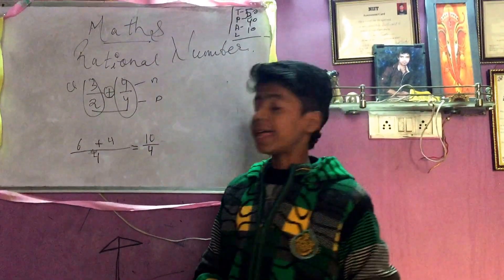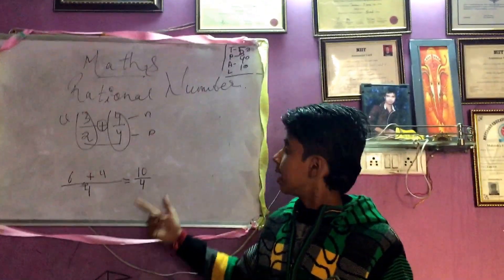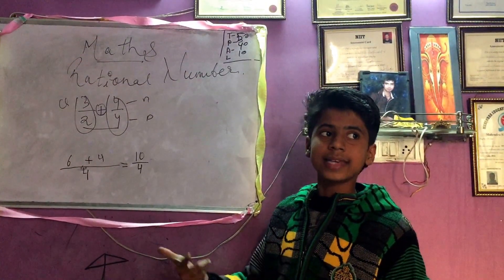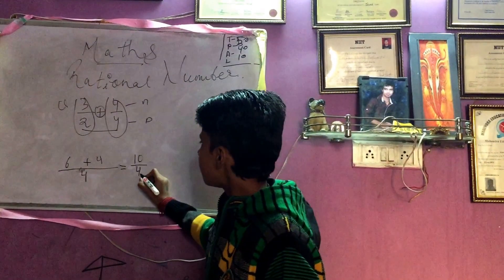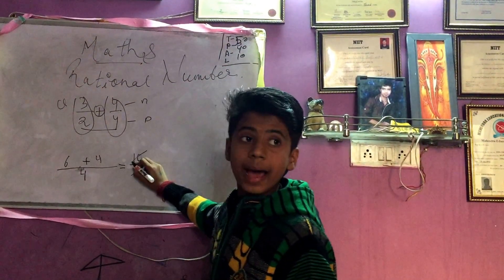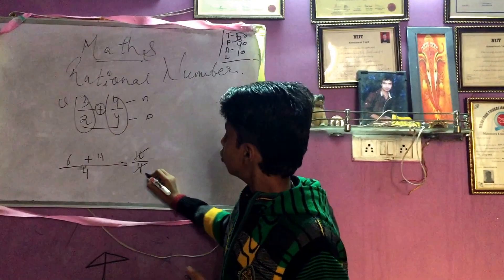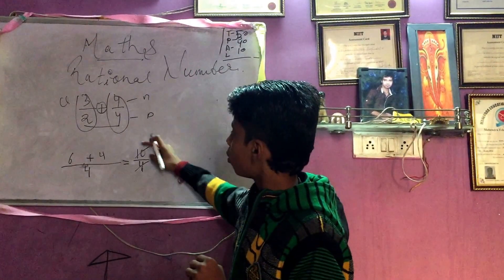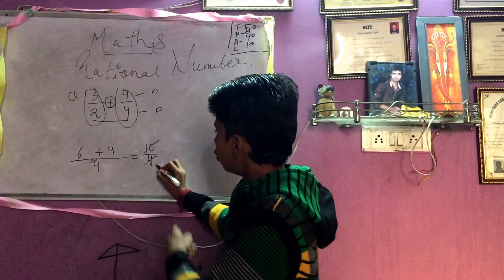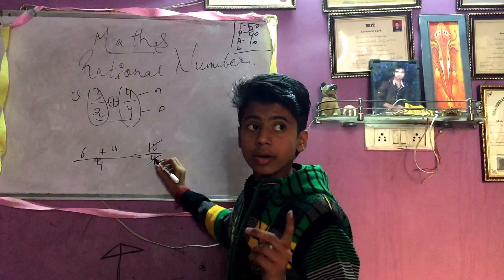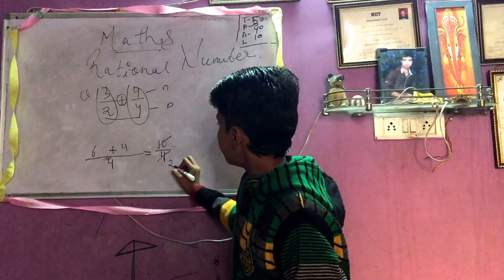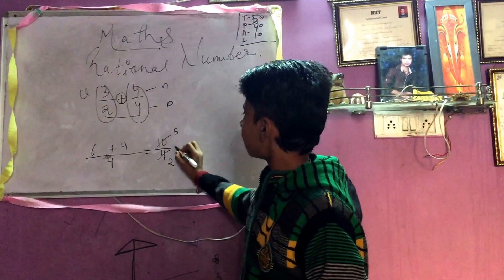There are two ways to simplify: first, cancellation; second, division. I am applying the cancellation method. Ten and four can both be cancelled by two, as both numbers appear in the table of two. So ten becomes five and four becomes two.